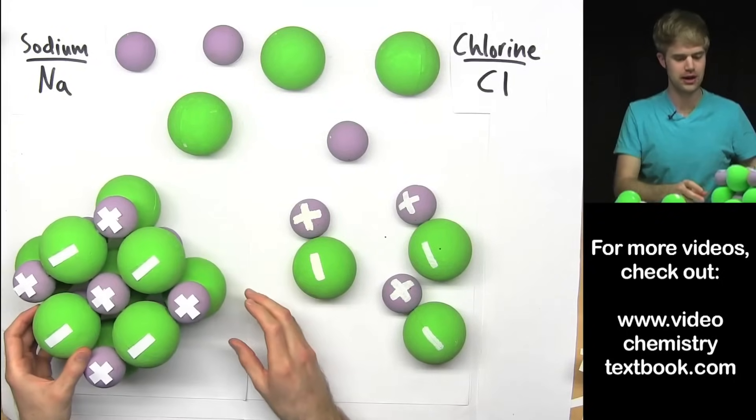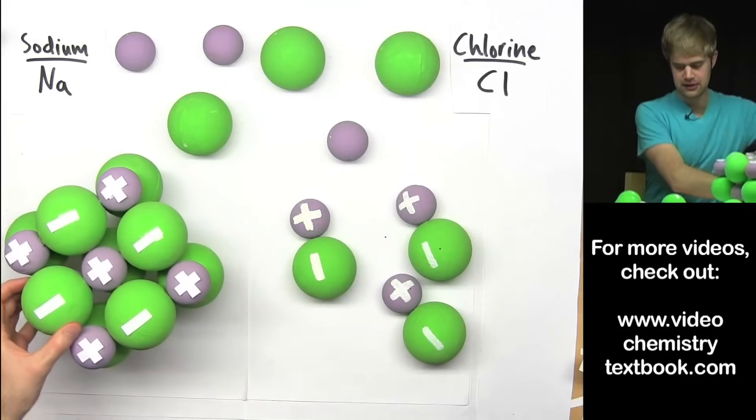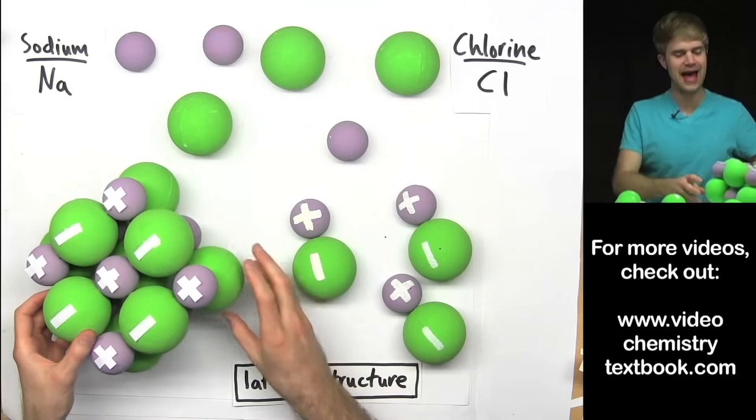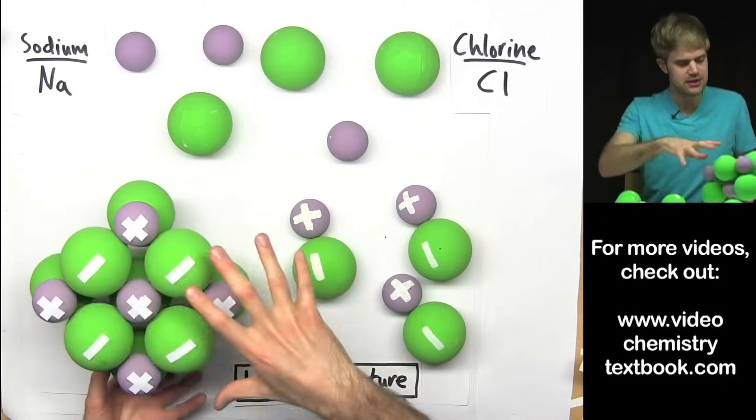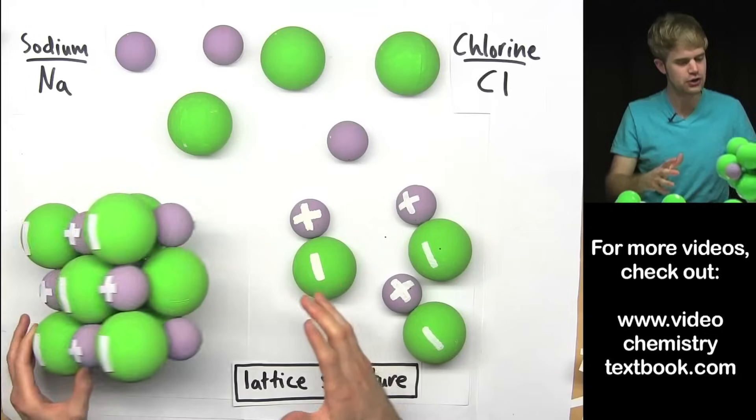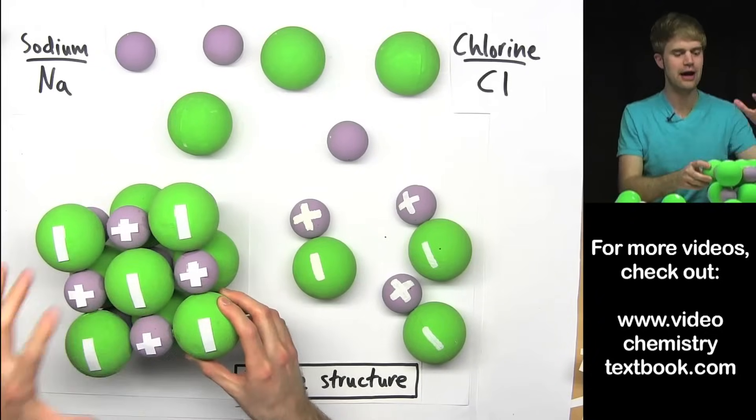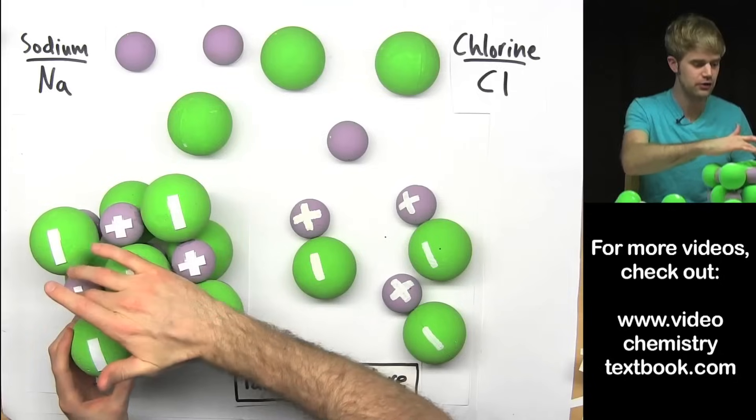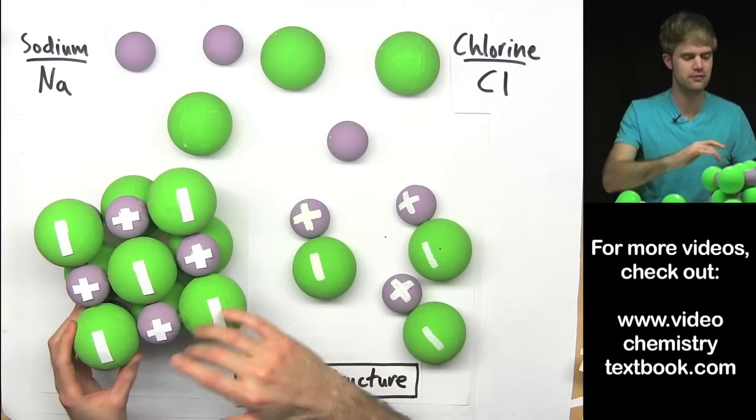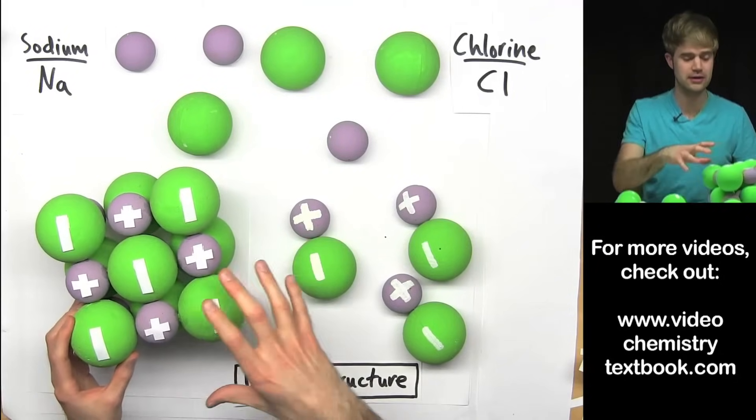This is called a lattice structure. And you can see how these ions are packed really closely together and how they're making this larger shape. Here we have a negative ion and it's surrounded by four positive ions because they're all attracted together.